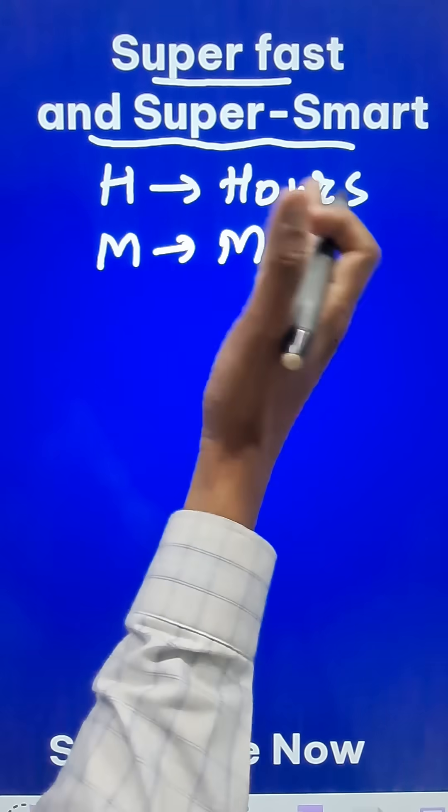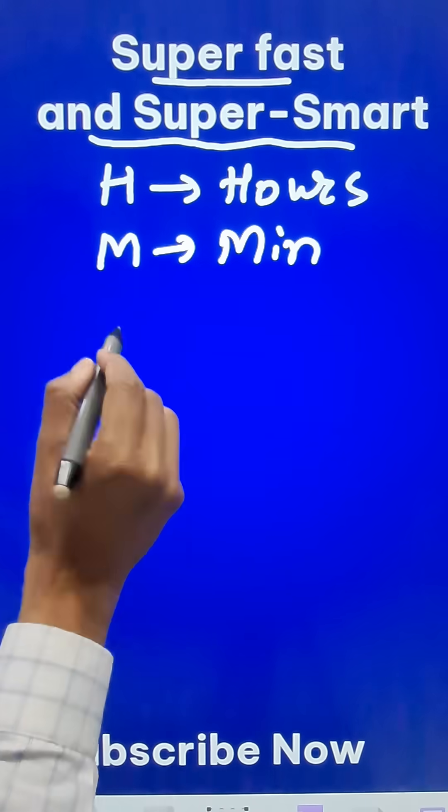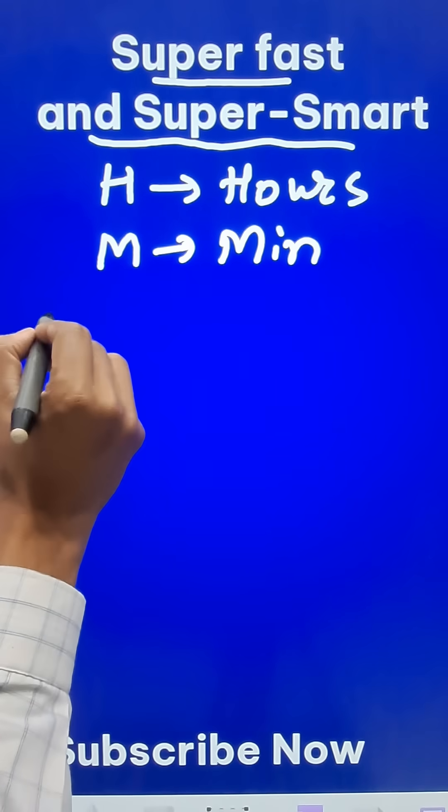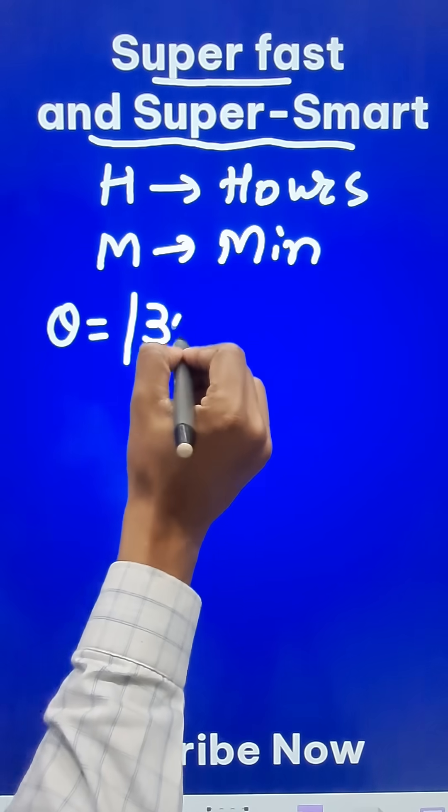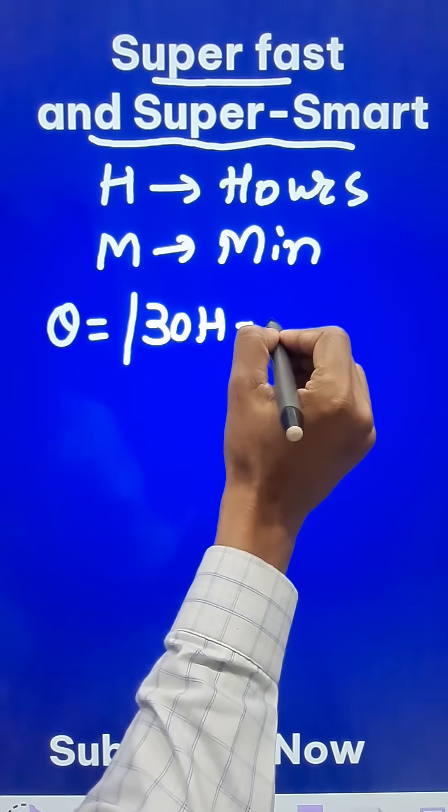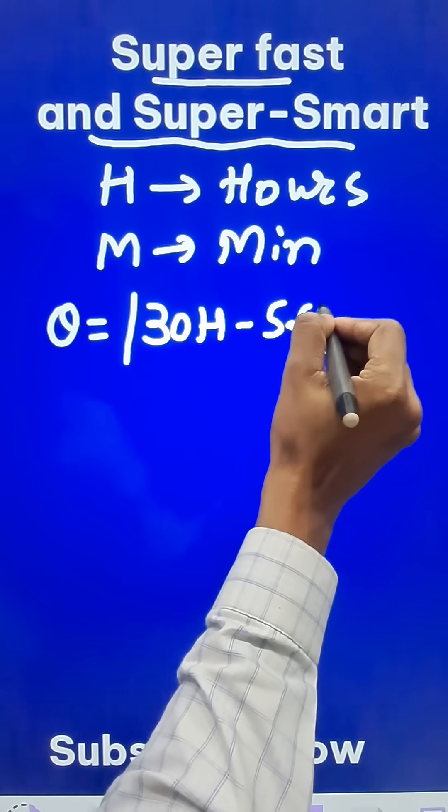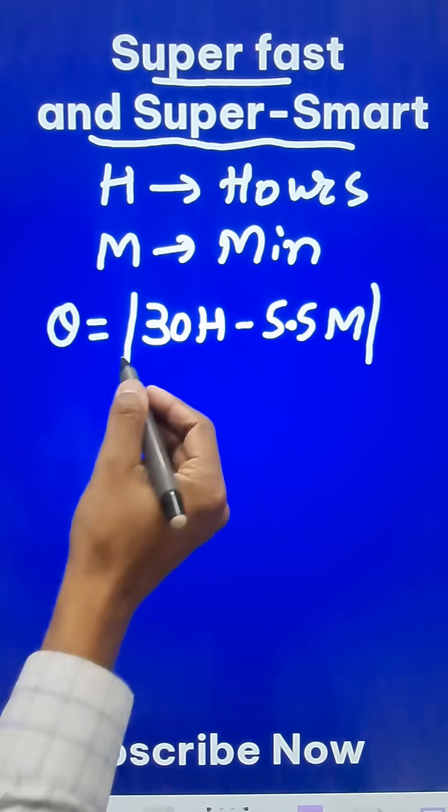That means if 10:45 is the time then m is 45. The angle between them is directly found out by using the relationship 30 times the hours minus 5.5 times the minutes, and we take the modulus so that if you get a negative answer you convert it to positive.